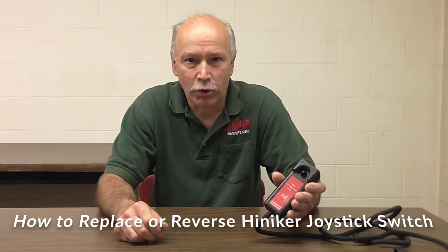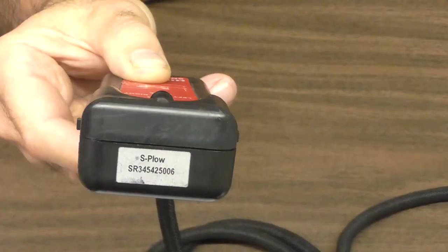Today I'll be using a straight blade controller for the tutorial. Look at the serial number tag on the controller. You'll see on this one that has an SR at the beginning of the number. The S tells us that it's for a straight blade plow.